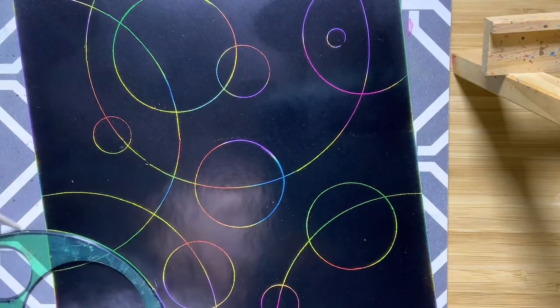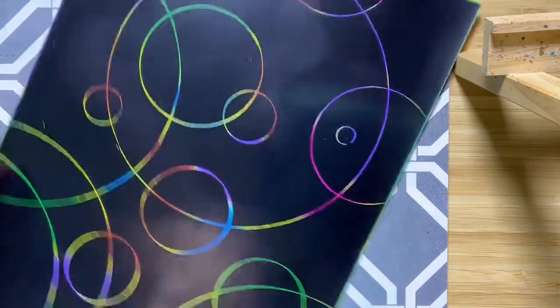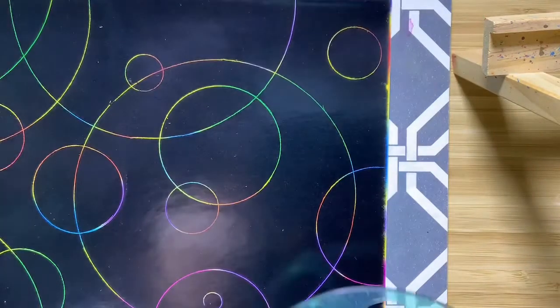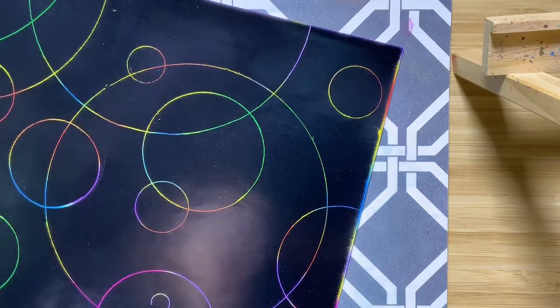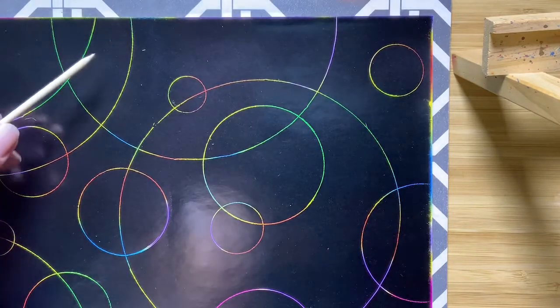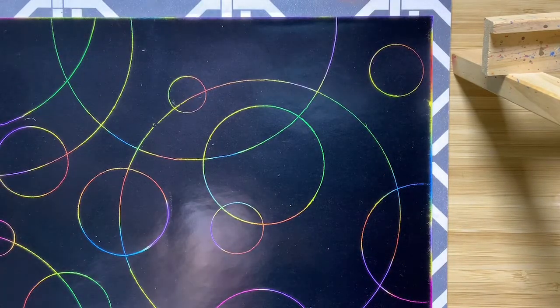So now my design is starting to look a little bit more interesting. I've got lots of lines, a lot of intersecting lines and intersecting circles. So what I can start to think about is picking and choosing some of these to scratch to let more of the color come through.